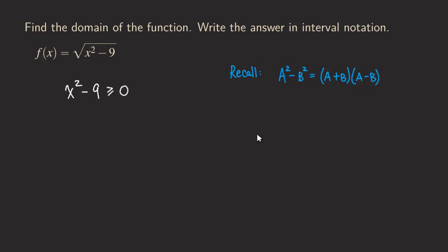So let's write it down. a is actually just x, and then b is 3. So as you can see, a square becomes x square, b square becomes 9.